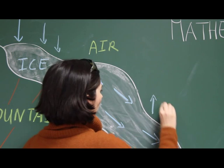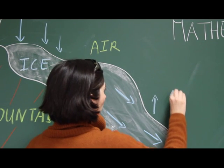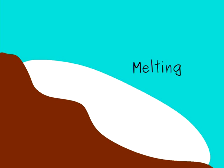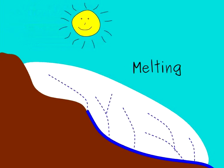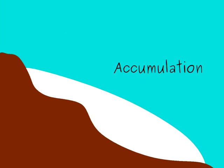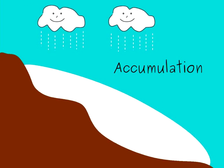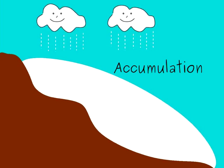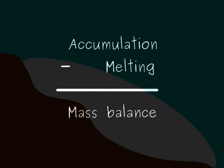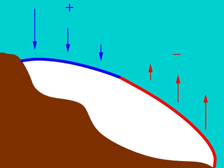The glaciologist computes the accumulation and the melting of ice due to weather conditions. On the one hand, the melting depends on the air temperature and the exposure to sunlight. On the other hand, the accumulation depends on snow precipitation. Computing the difference between the accumulation and melting over one year, we can obtain the mass balance. The mass balance is usually positive at the top of the glacier and negative at the bottom.